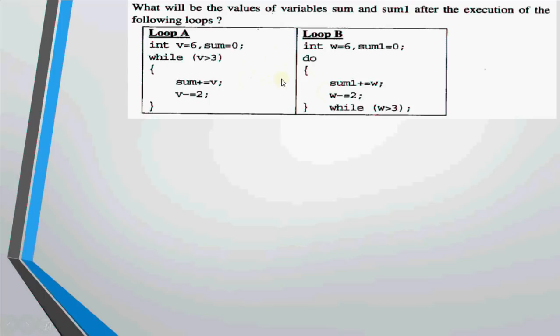Let's see how this code works over here in this example. So the question is, what will be the values of variable sum and sum1 after the execution of the following loops? Let's go for the working of loop A first. Now here we have a variable v which is initially 6 and sum is initially 0. So we check if 6 is greater than 3.